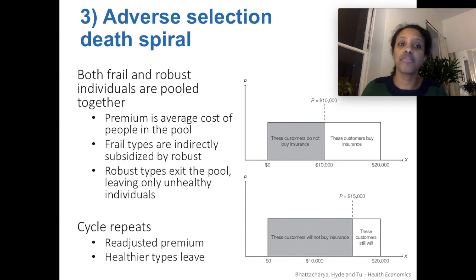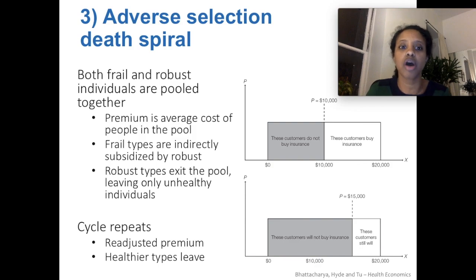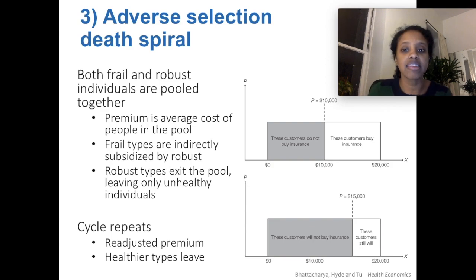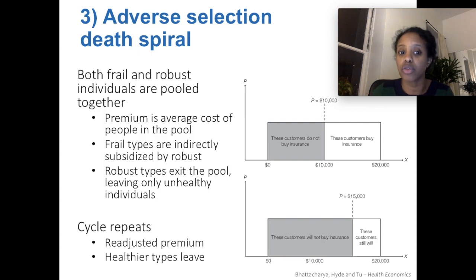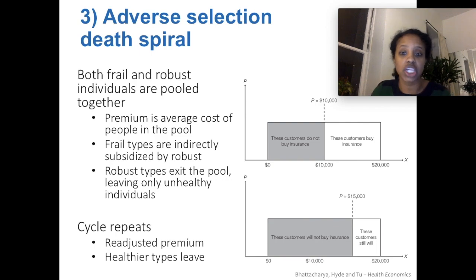Finally, there would be this phenomenon of the adverse selection death spiral. It's a scary phrase, and it means something that happens when insurance markets unravel. In the insurance market, there are both healthy and sick people who are sharing a pool, and the premium they're paying is the average across all of them, which means that the healthy people are indirectly subsidizing the sick people who end up drawing out those benefits. So if you're a person whose expected payout is less than that average $10,000 premium being charged to everybody, you might want to leave because it would be an unfair contract if your premium is greater than your expected payout.